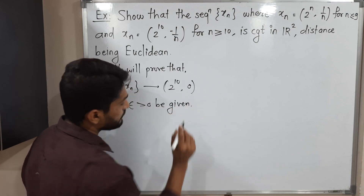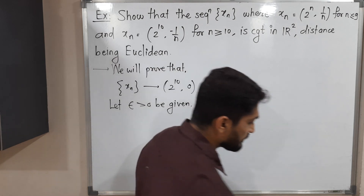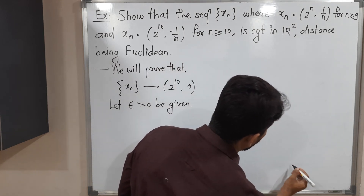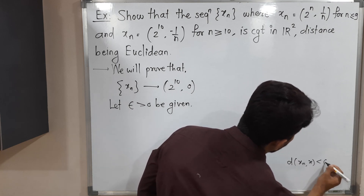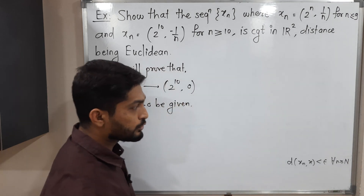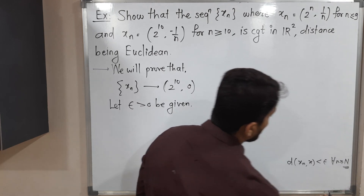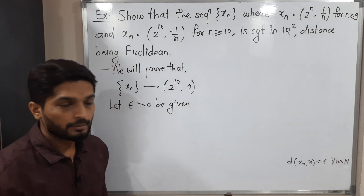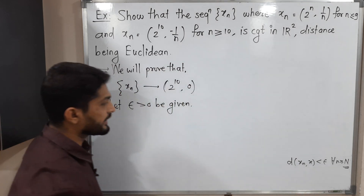I will write the definition so you can easily follow the next steps. The distance between xn and x should be less than epsilon for all n greater than or equal to capital N. Our main task is to find this capital N for which the definition will be satisfied. Let us start working on d(xn, x) and find its value.